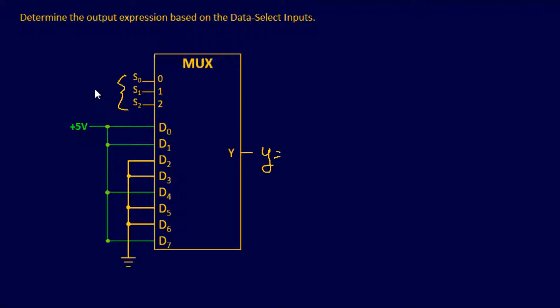So these right here is what we're going to determine based on your data select inputs. So how we're going to get a high output based on these guys right here? Well, looking at this, anytime I see s of 0, that's your least significant bit. And then s of 2 is your most significant bit.